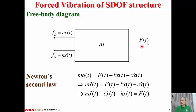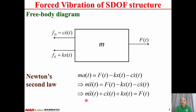Here is the free-body diagram. From Newton's second law, M times A equals the resultant force. The resultant force consists of external force Ft, which is positive because it points to the right. The restoring force Kx is negative, because if X is positive, the restoring force points to the left. The damping force Cx is also negative.